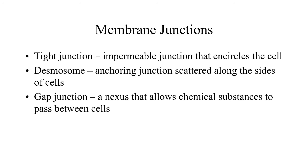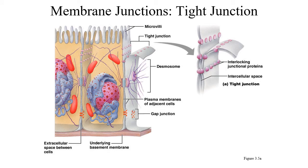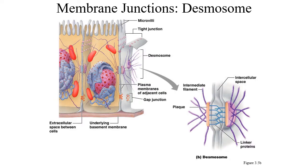Gap junctions are similar to tight junctions in that they weld two cells together, but they don't hold the two plasma membranes very tightly, so things can slip between them. Gap junctions also have a pore in the middle, allowing substances to move from one cell to the next. Tight junctions are used in places like the skin and digestive tract where an impermeable barrier is needed, while desmosomes are used in other places.